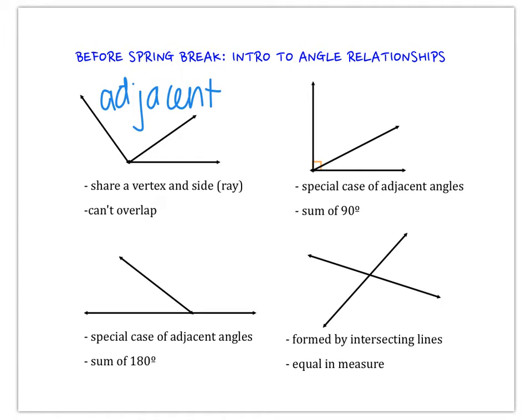Even outside of math class, adjacent means right next to. If we look on the right, top right, this is a special case of adjacent angles. They still share a vertex, they still share a ray, and they're not overlapping. They're still right next to each other. This is special though, because if you look, they create a 90 degree angle and therefore have a sum of 90 degrees. Remember, those are complementary angles.